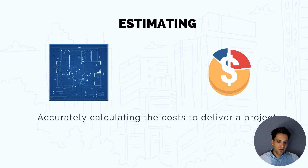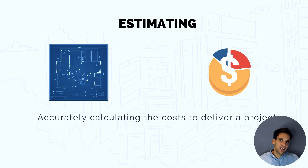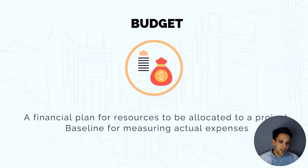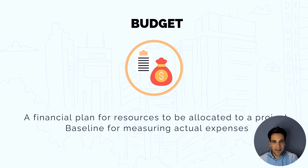Estimating is the process of accurately calculating the cost to complete the project. In the pre-delivery phase, we work out all the resources we need and how much they'll cost to arrive at a total estimated cost. Once we begin to spend money, we need a budget. A budget is a financial plan for the resources to be allocated during project delivery. An estimate is different to a budget: an estimate is a build-up of the cost, while a budget is how we're going to track and manage expenditure.